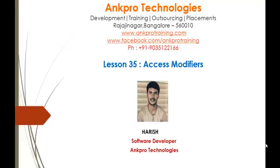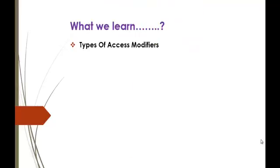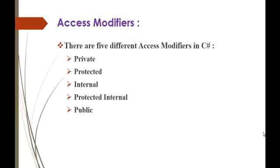Hello, welcome to lesson 35: Access Modifiers, brought to you by Angpro Technologies. My name is Arish. In this session we are going to learn the types of Access Modifiers. There are 5 different Access Modifiers in C-Sharp: private, protected, internal, protected internal, and public.